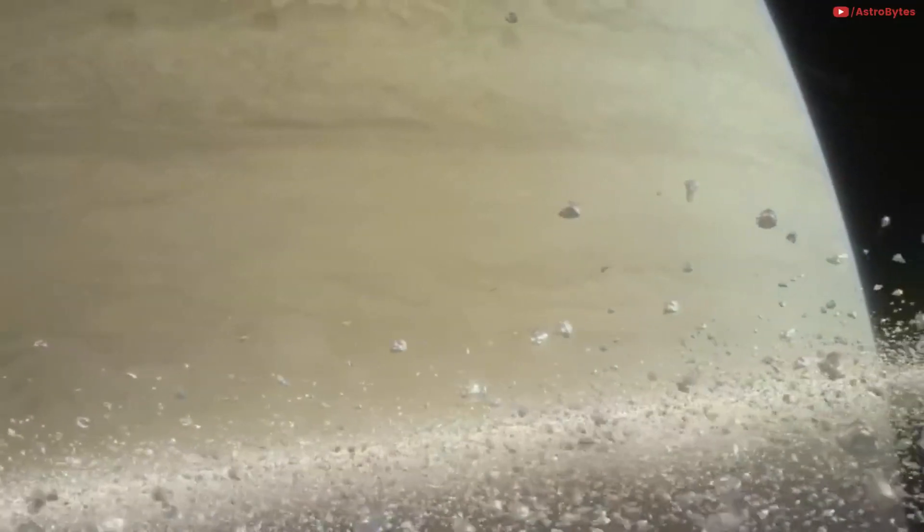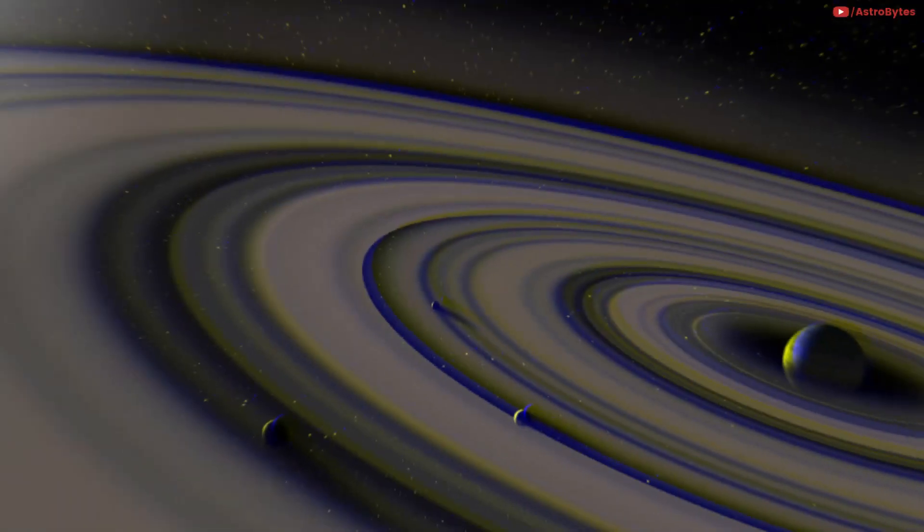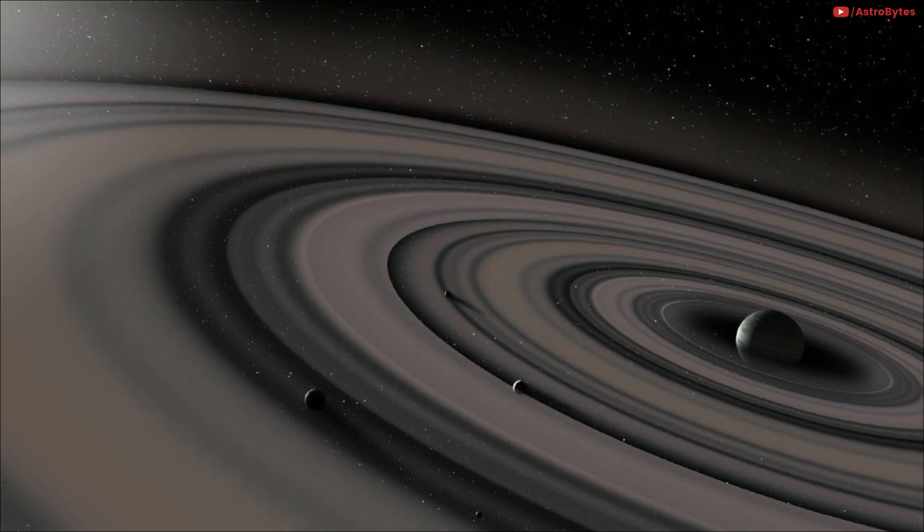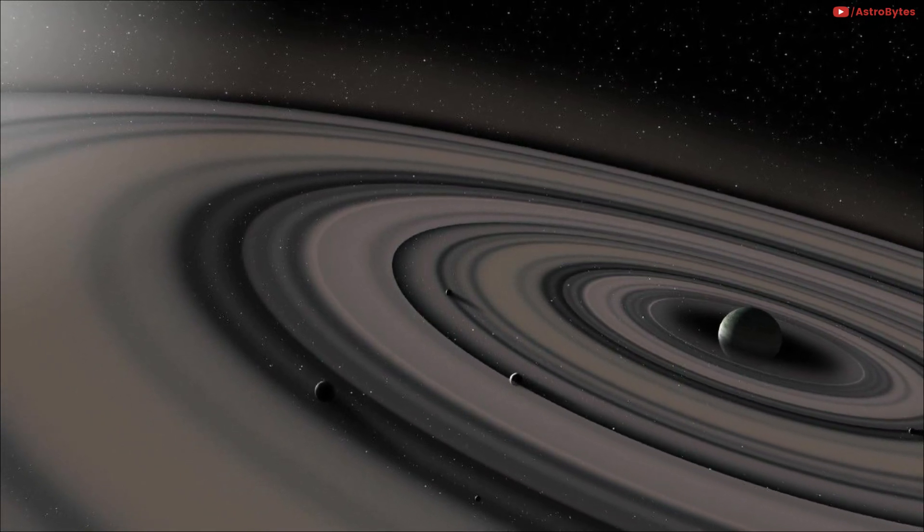It is feared that this planet will not always stay like this, which means the rings may not sustain long. The rings may be transformed into moons of the planet, just like Saturn's 82 moons.